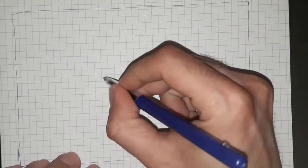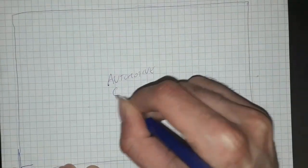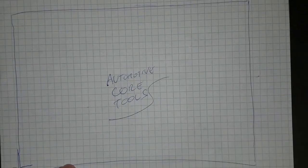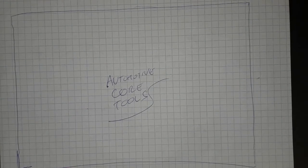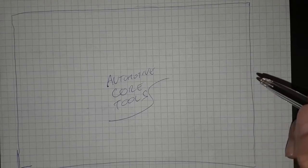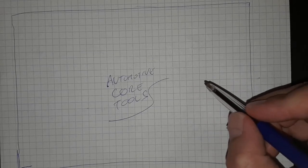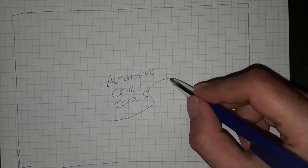Hello, in today's topic we will talk about automotive core tools. There are five methodologies to run an automotive factory — to run the design process, the project management, to manage the risk, to make sure that the measurement processes are okay, and to make sure that the production processes are okay.